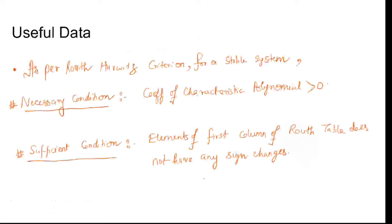For useful data, you need to know: As per Routh-Hurwitz criterion, for a stable system, the necessary condition is that the coefficients of its characteristic polynomial should be greater than zero, and the sufficient condition is that elements of the first column of the Routh table do not have any sign changes.